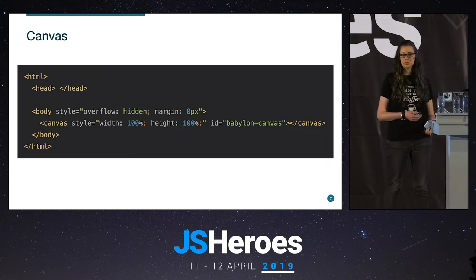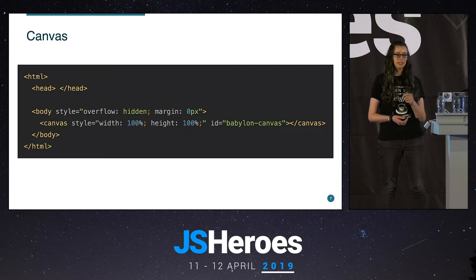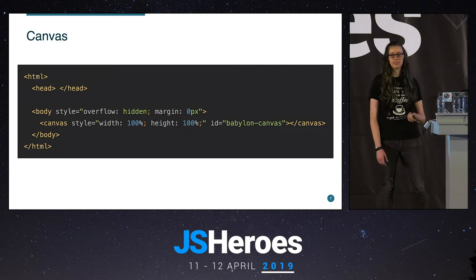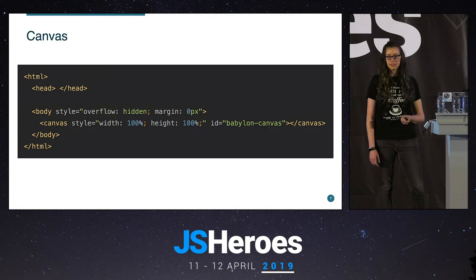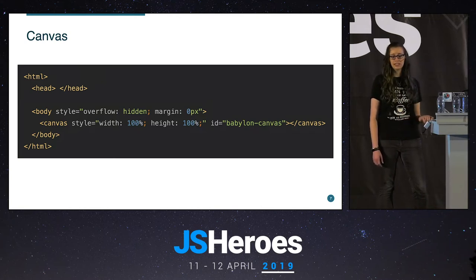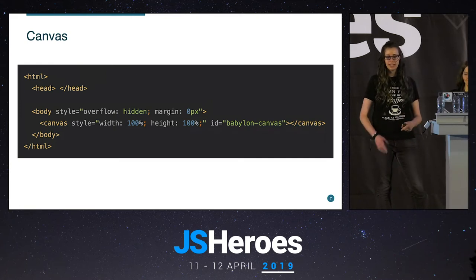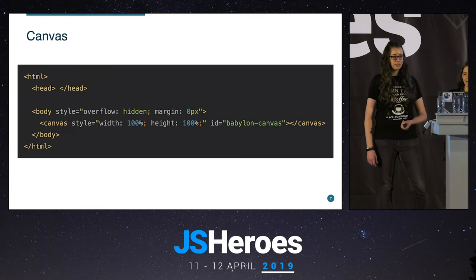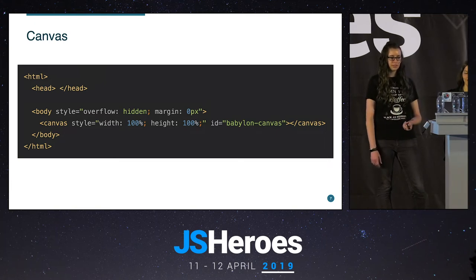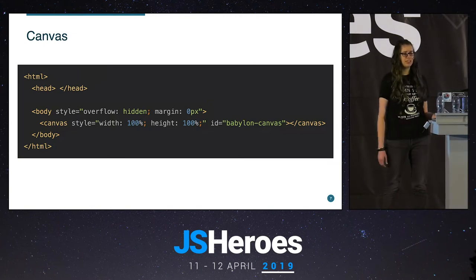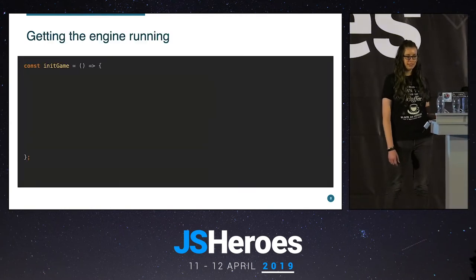Let's get started with actual JavaScript. The first thing we do is create an init game function. Inside that function we grab our canvas by the ID we assigned previously, initialize our engine and our scene, then tell it to loop and render our scene. Finally, we start everything.